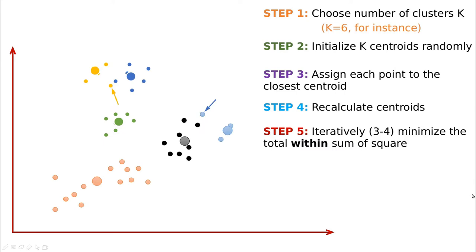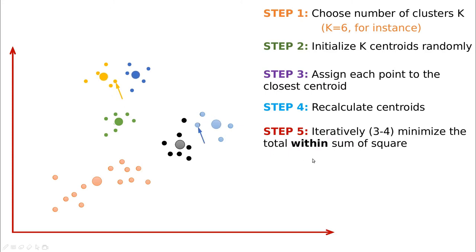Let's repeat that again. Now you can see this point is going to be yellow because it's closer to this centroid. This one is going to be blue despite being closest to a black point — remember we are now trying to be closer to the centroid. Let's iterate again. Some changes occur: this point becomes yellow again, this one blue. We continue iterating until things are more or less stable, and after a few iterations we finish.